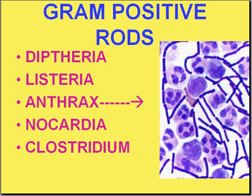Clostridium is the last gram-positive rod in this group and is a very important cause of food poisoning, with several different species. Clostridium botulinum releases a toxin causing a severe type of food poisoning. Clostridium perfringens is the most common cause of gas gangrene — it's an anaerobic bacterium that generates gas. And Clostridium tetani is the causative agent of tetanus.